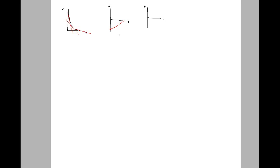It is linear because my acceleration is going to be constant. How we get acceleration is the slope of the tangent line of velocity. If I look at this graph, the slope is the same everywhere, and the slope is positive. Therefore, my acceleration needs to also be positive and horizontal.